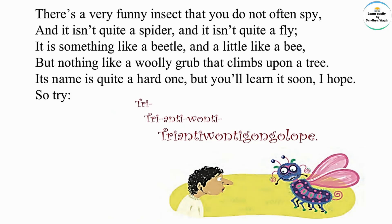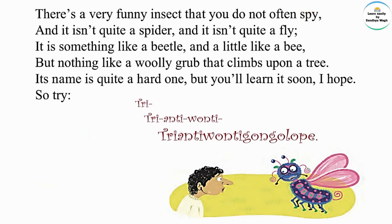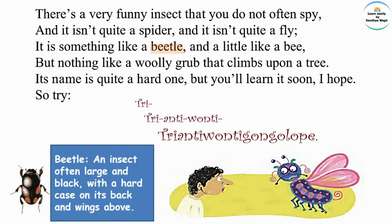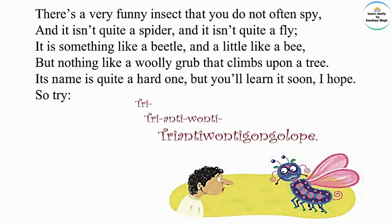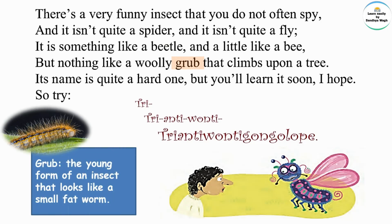There is a very funny insect that you do not often spy — spy means see. And it isn't quite a spider and it isn't quite a fly. It is something like a beetle — beetle means an insect, often large and black, with a hard case on its back — and a little like a bee, but nothing like a woolly grub that climbs upon a tree. Woolly grub means the young form of an insect that looks like a small fat worm.